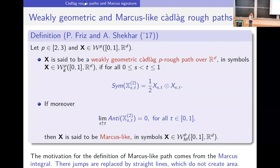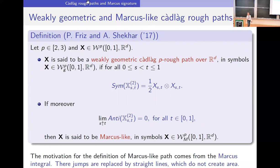There is also a condition called Marcus-like on the anti-symmetric part of the second-order lift, namely that it equals zero. This is called Marcus-like because in the Marcus integral one connects jumps by straight lines; the interpretation is that the anti-symmetric part represents the area the path creates, and if you connect something by a straight line you do not create an area.